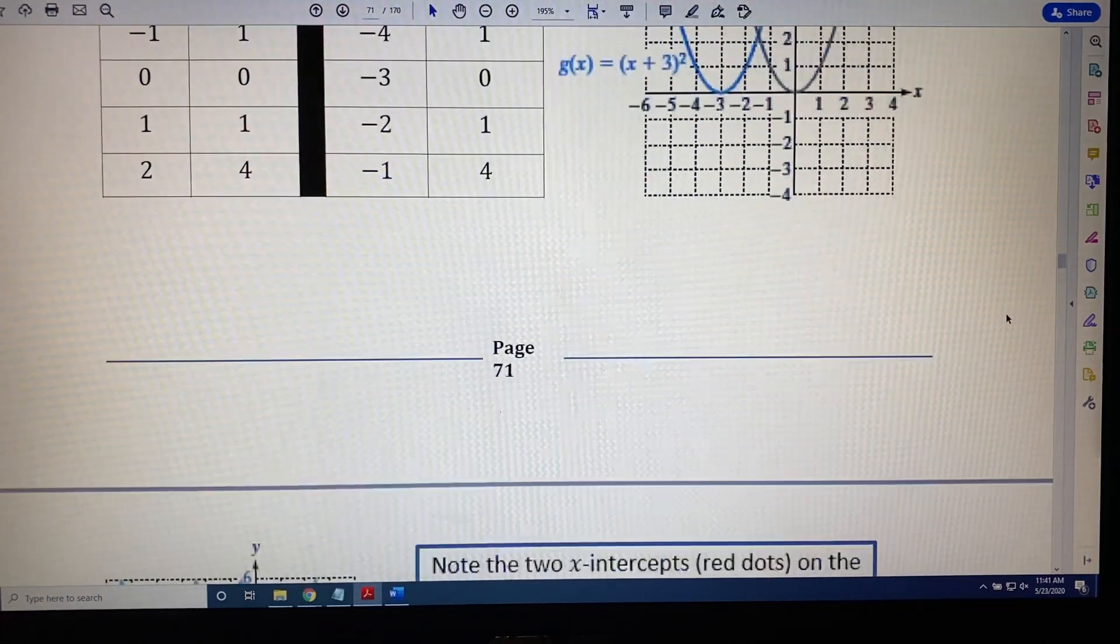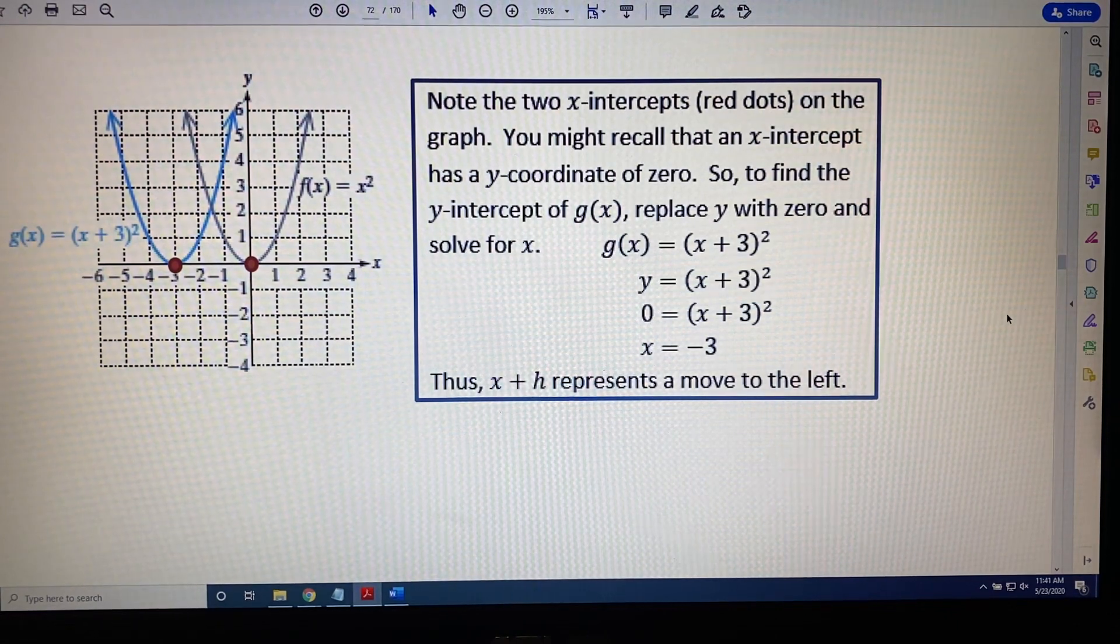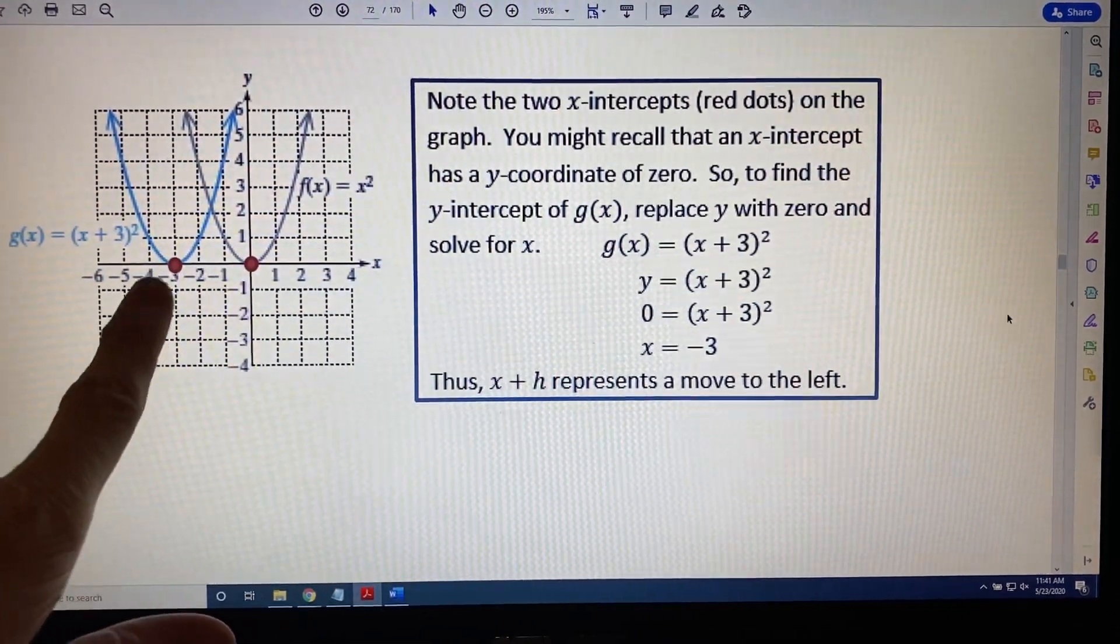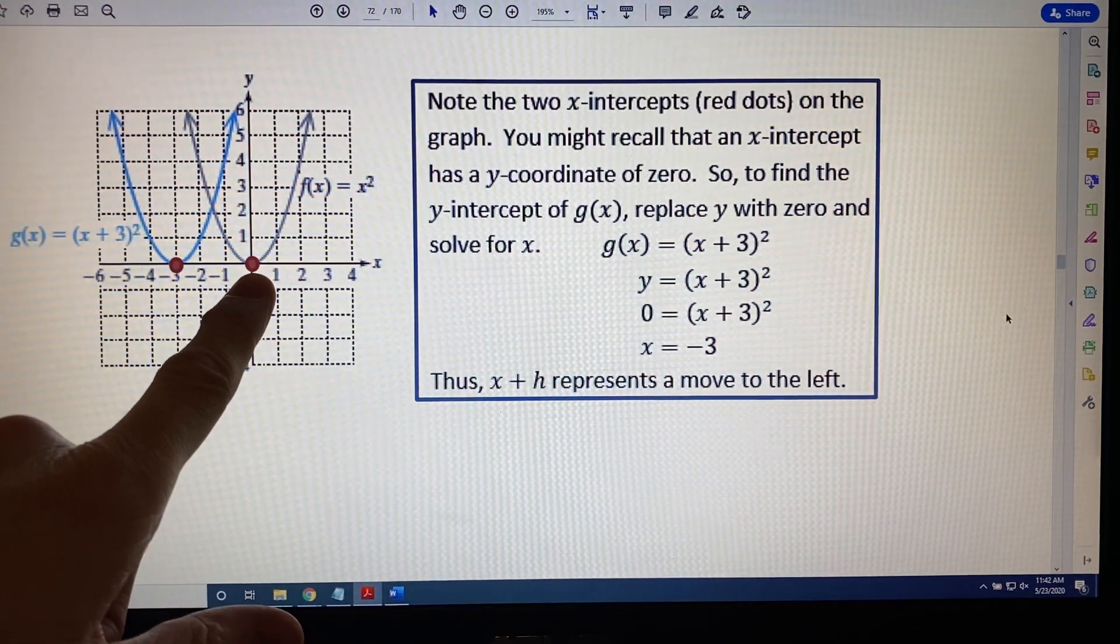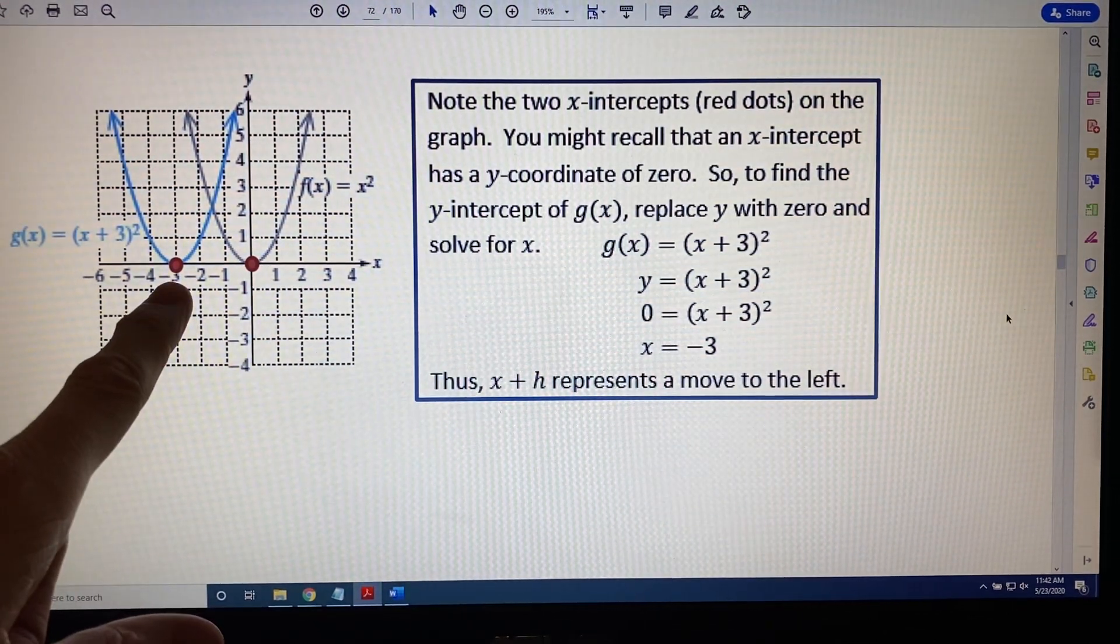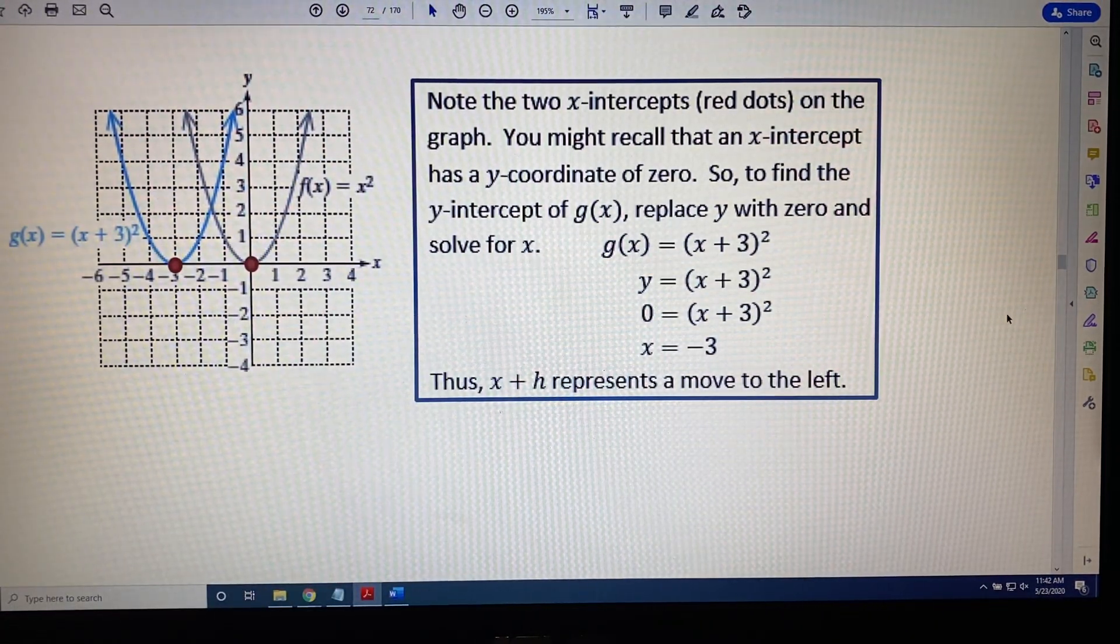That's our first example. Now, I'd like you to take notice of something from these pairs of graphs here. The gray graph has an x-intercept at 0. The blue graph has an x-intercept at -3. Note the two x-intercepts, the red dots on the graph.